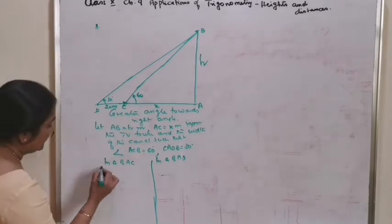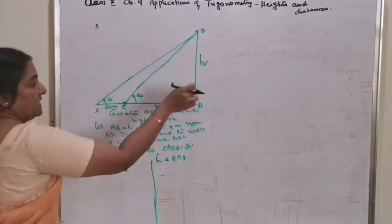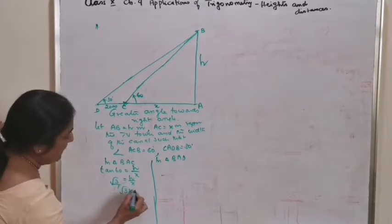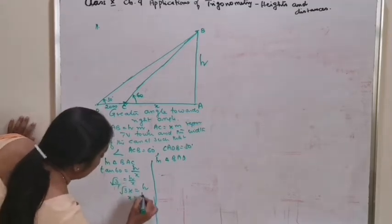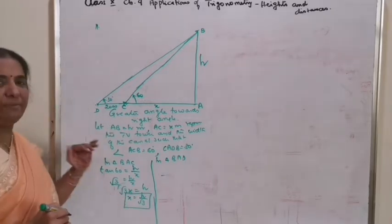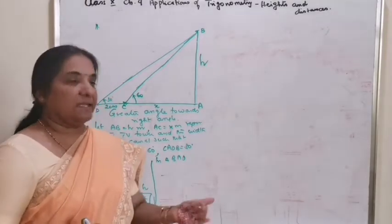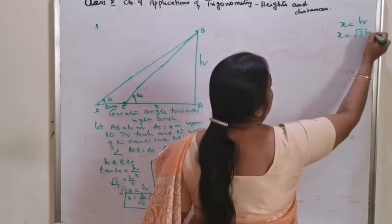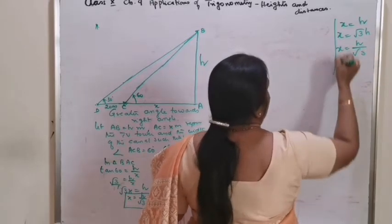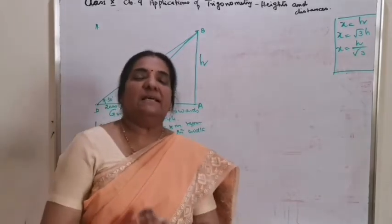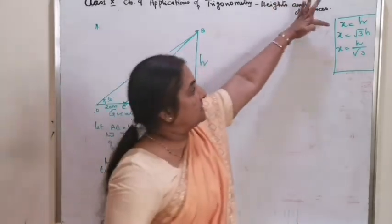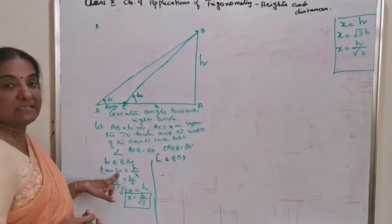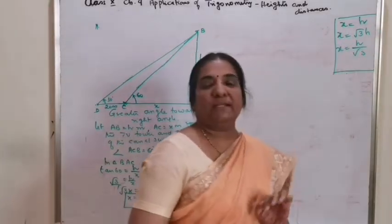Whatever value you get, you can eliminate X. The three cases with these angles are: X and H are equal when angle is 45 degree; X equals H by root 3 when angle is 60 degree; and X equals root 3 H when angle is 30 degree. These are the only possible cases, because the angles considered are 30 and 60 degrees.